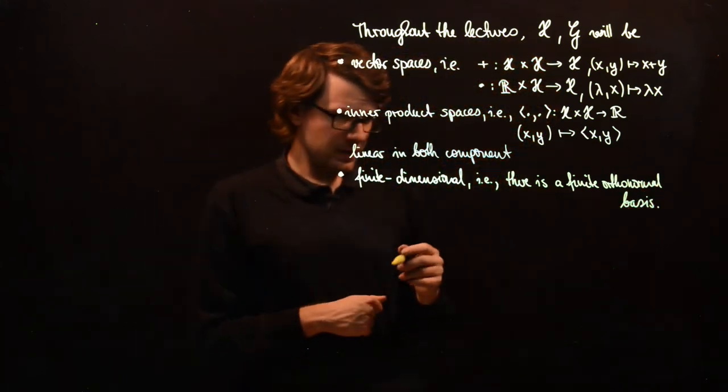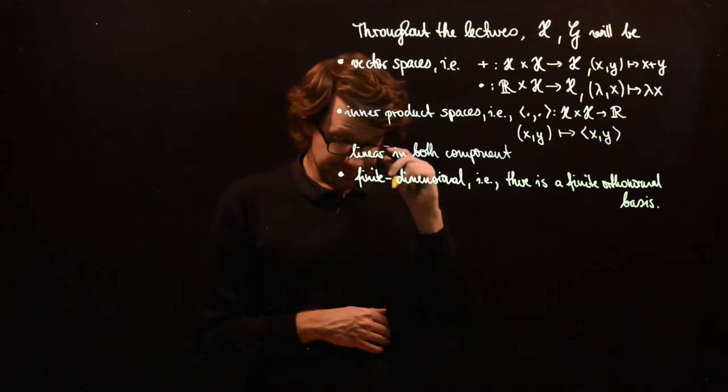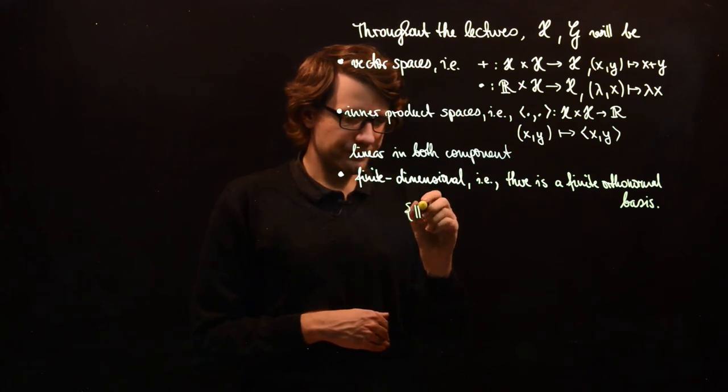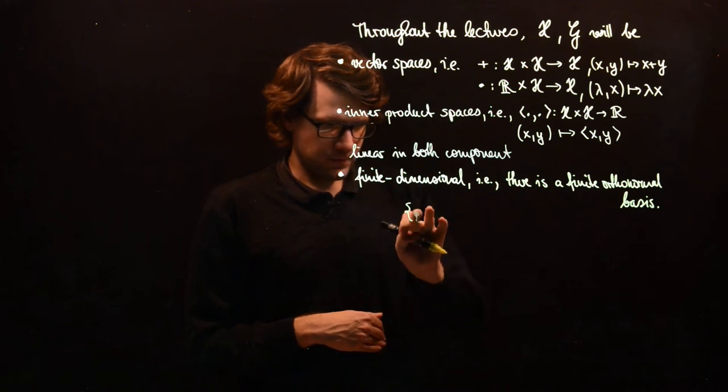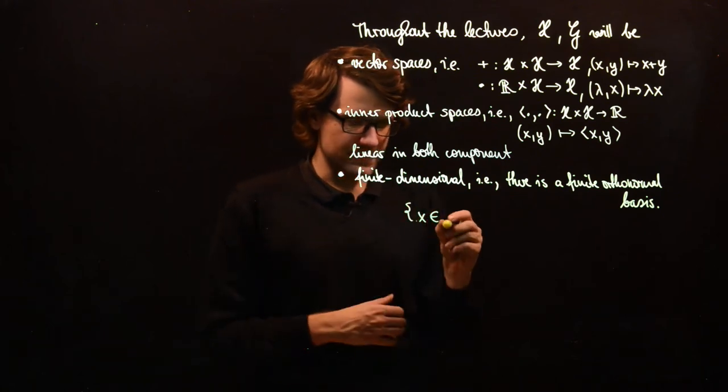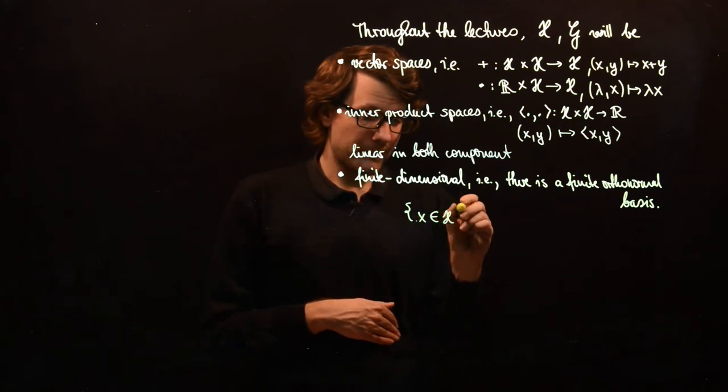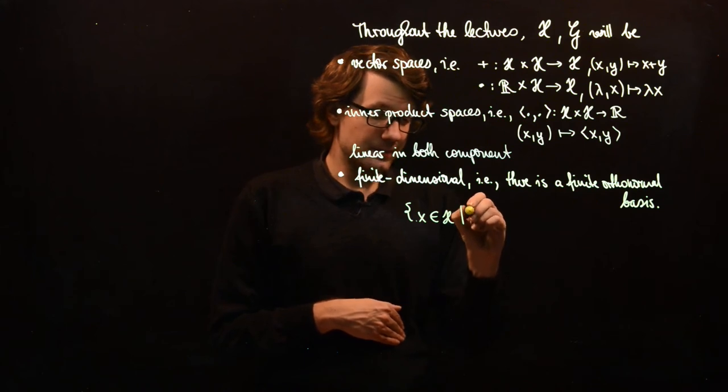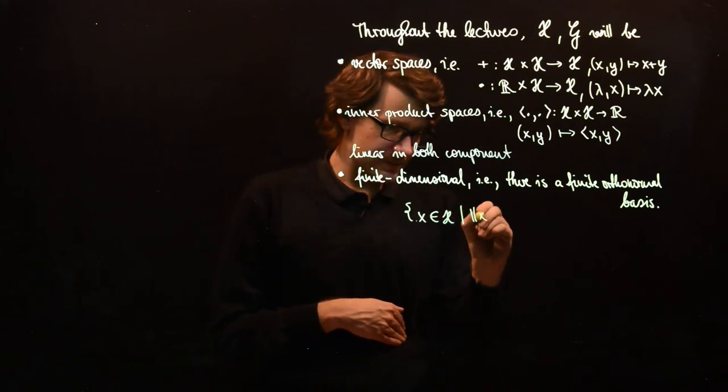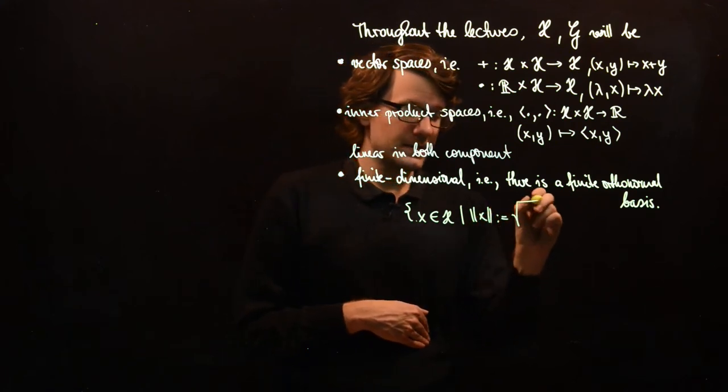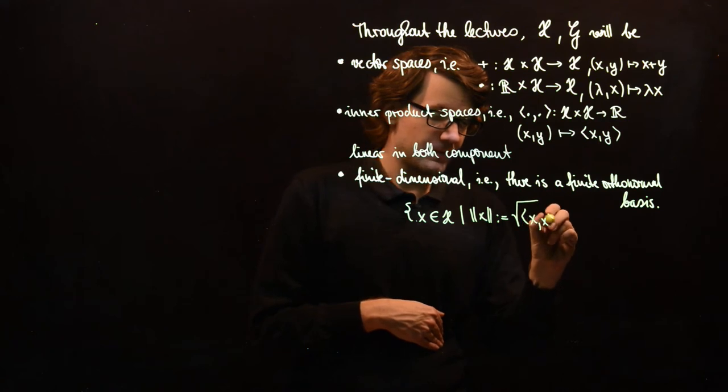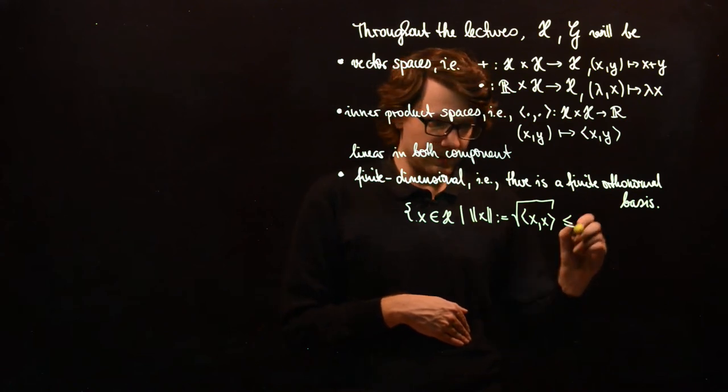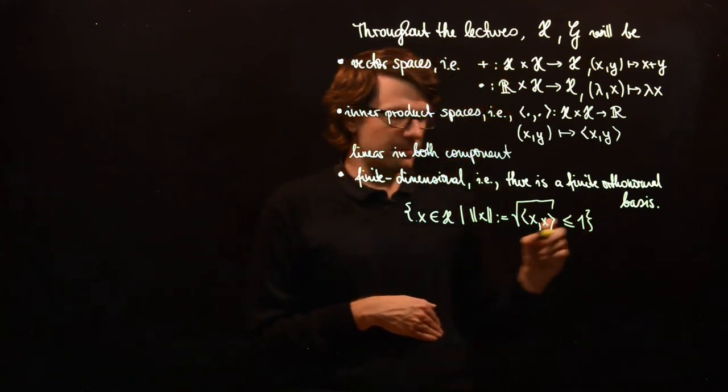You can even assume, because we have an inner product, that there is a finite orthonormal basis. And you can also assume that the ball, if you take the set of all x's such that the norm of x, which is defined as the square root of the inner product of x with itself, is less than one, is a compact set.